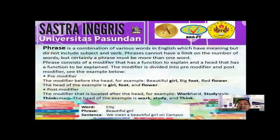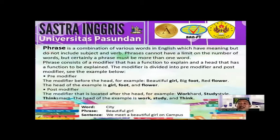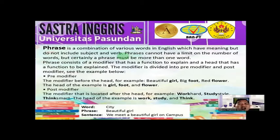The second topic is phrase. It might seem that phrase and compound word are the same, but let's see the specific explanation. A phrase is a combination of various words in English which have meaning but do not include a subject and verb. The explanation is almost similar, but a phrase involves a variety of different types of words — it can combine nouns, adjectives, and verbs together into one unit.